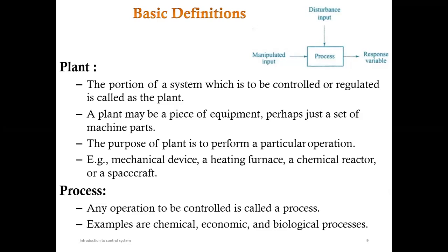In the basic definitions, a plant is the portion of the system which is to be controlled or regulated. A process has two inputs — manipulated input and disturbance input — and produces a response variable. The plant may be a piece of equipment or a set of machine parts; its purpose is to perform a particular operation, such as a mechanical device, heating furnace, chemical reactor, or spacecraft.